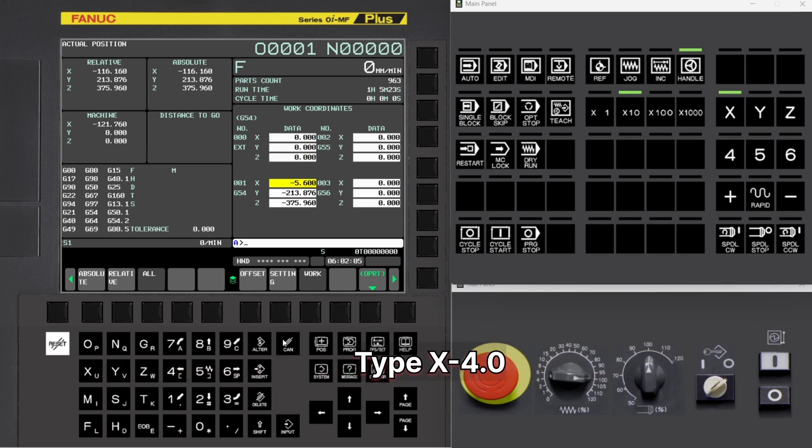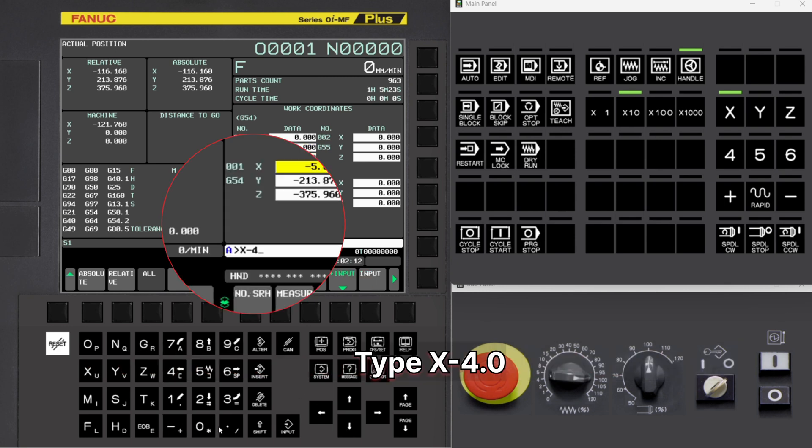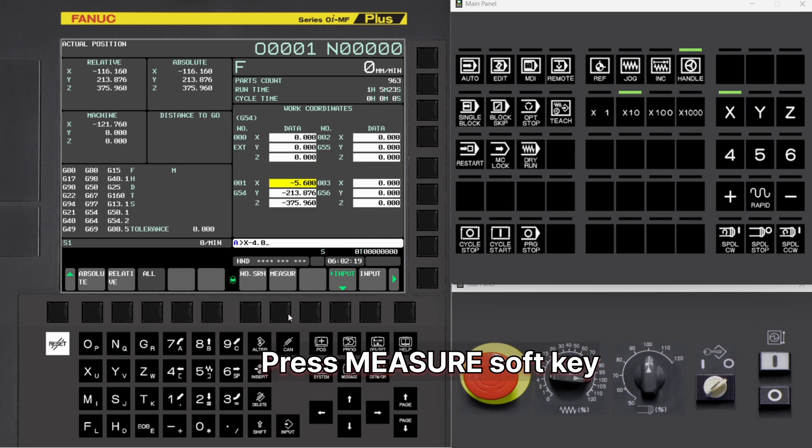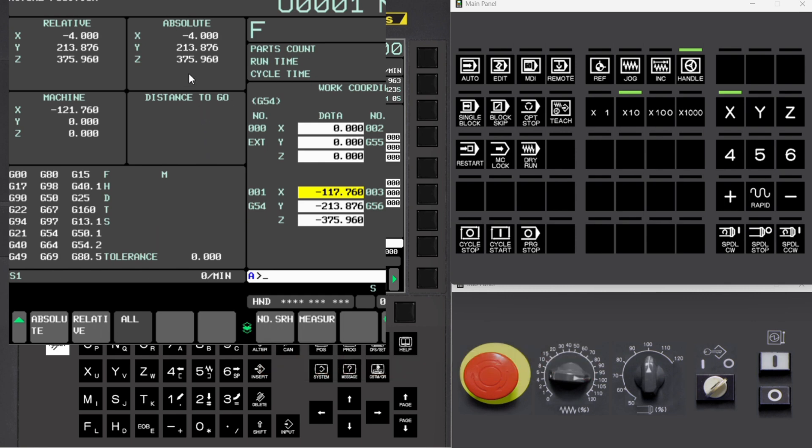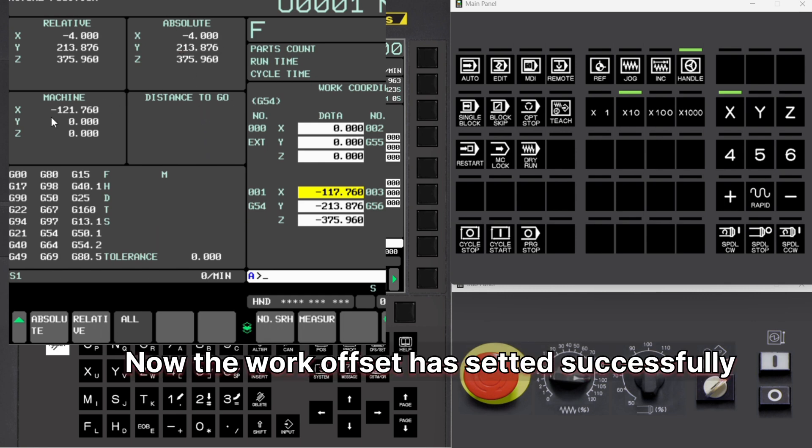Type x-4.0. Press Measure Soft Key. Now the work offset has been set successfully.